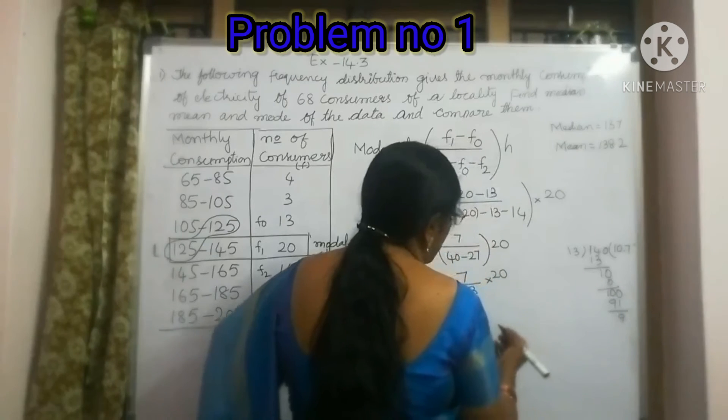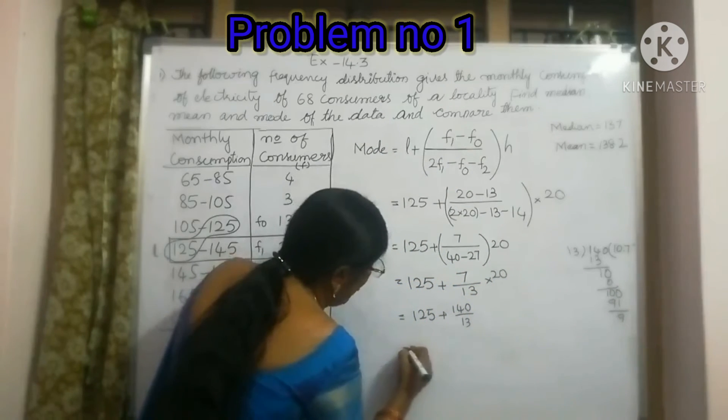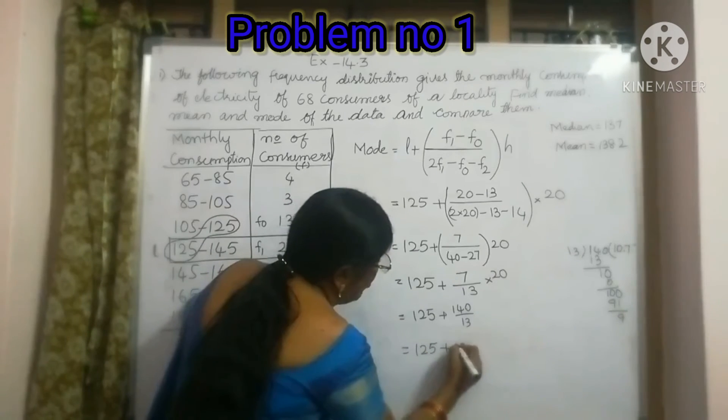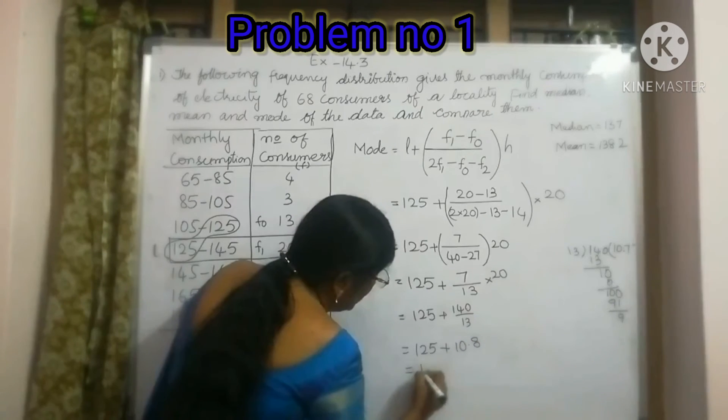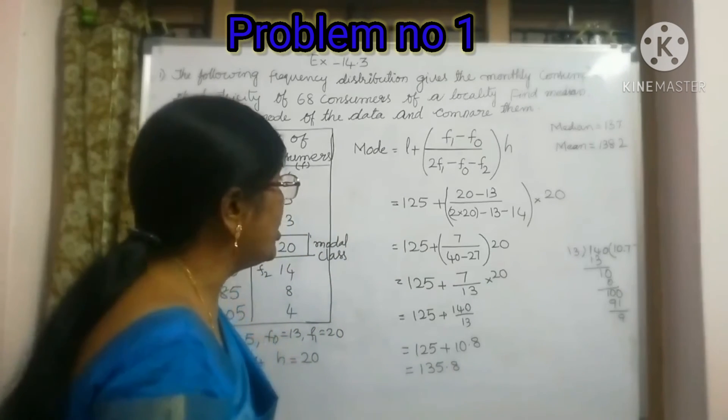We can take this as approximately 10.8. So 125 plus 10.8, this will give you 135.8. If we add this we will get 135.8.